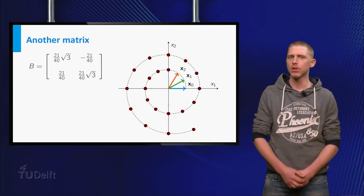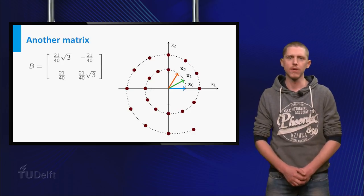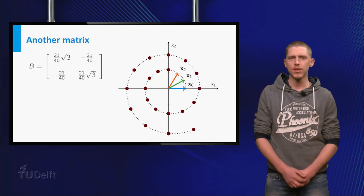Apparently, multiplication of a vector by B rotates and scales the vector. Could you have seen this from the shape of B?